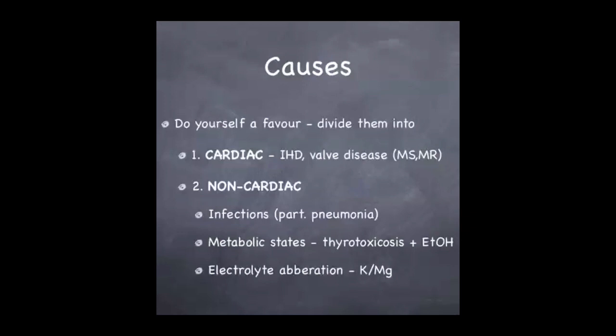Causes of atrial fibrillation is a real classic to be asked on a ward round, usually at 8:15 on a Monday morning. Do yourself a favour: divide up the causes into cardiac causes and non-cardiac causes. The most important cardiac causes are ischemic heart disease and any type of valve disease that results in distension of the left atrium — important examples being mitral stenosis and mitral regurgitation. The important non-cardiac causes to remember are infections, particularly pneumonia, metabolic states such as thyrotoxicosis and alcohol ingestion, and aberrations in electrolytes, particularly potassium and magnesium.